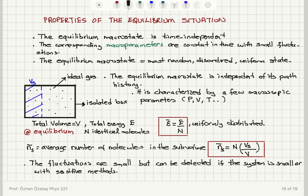To summarize: the equilibrium macrostate is time independent. Once you reach the equilibrium state, there is no preference for time — going forward or backward in time makes no difference while in the equilibrium macrostate. The corresponding macro parameters are few — pressure, volume, and temperature, for example — and they are constant in time with small fluctuations. Those fluctuations are detectable using sensitive methods.